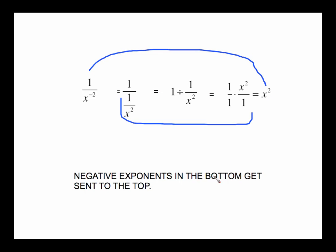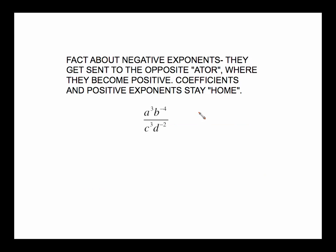An easy rule: negative exponents in the bottom get sent to the top, and negative exponents in the top get sent to the bottom. The fact about negative exponents is they get sent to what I call the opposite ador — numerator or denominator — where they become positive. Coefficients and positive exponents stay home. Negative in the bottom goes to the top; negative in the top goes to the bottom.